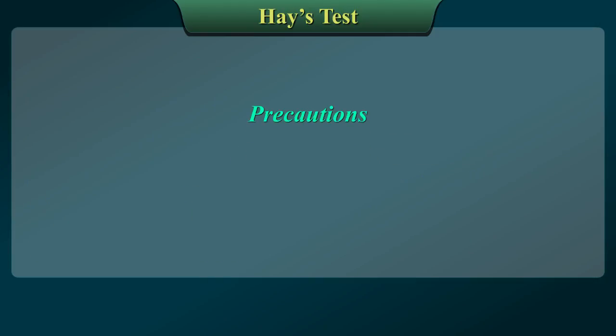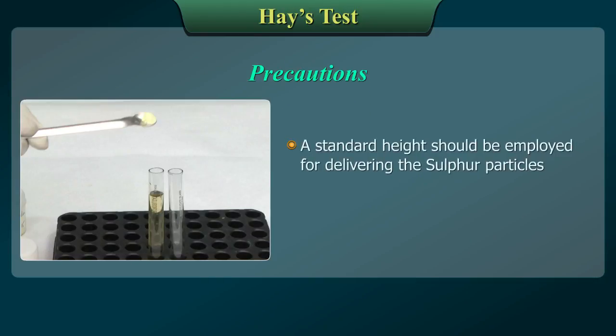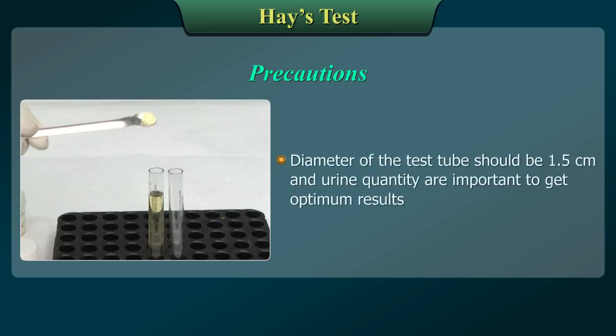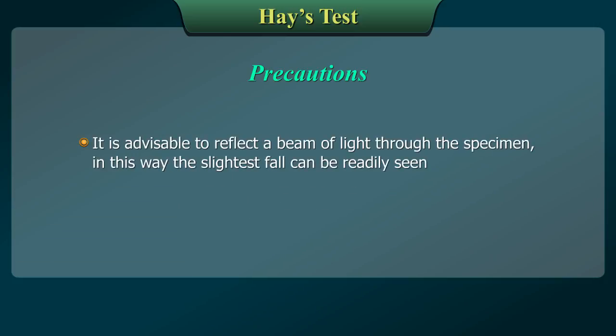Precautions: A standard height should be employed for delivering the sulphur particles. The usual distance recommended is 4 inches above the specimen. The diameter of the test tube and the urine quantity are important to get optimum results. It is advisable to reflect a beam of light through the specimen; in this way, the slightest fall can be readily seen.